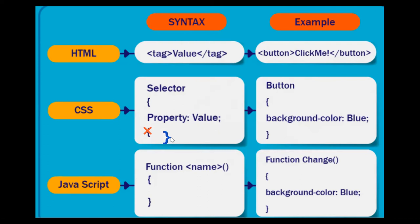For CSS: selector, then a curly bracket, then property, value, semicolon, then the closing curly bracket. An example is given: 'button' selector, opening curly bracket, 'background-color: blue', closing curly bracket — this sets the button's background color to blue. For JavaScript, the syntax is: 'function', then the function name, parentheses, then an opening curly bracket, your code on a new line, then a closing curly bracket. There can be many lines of code inside.